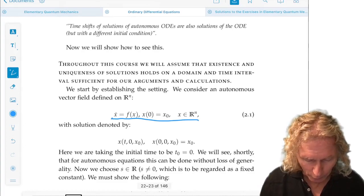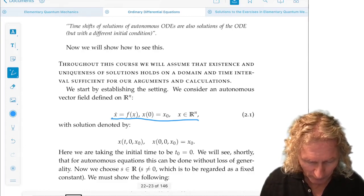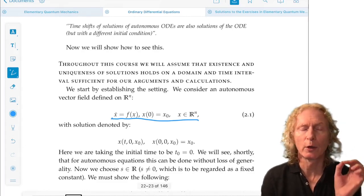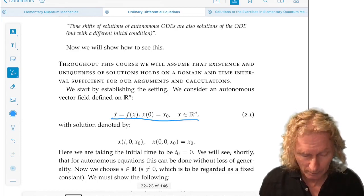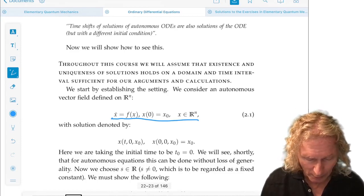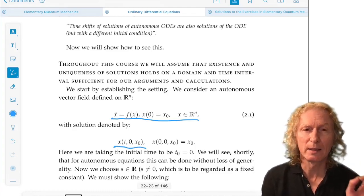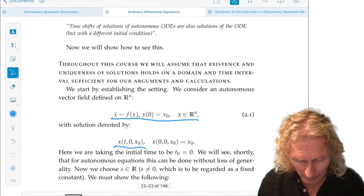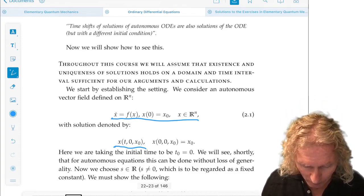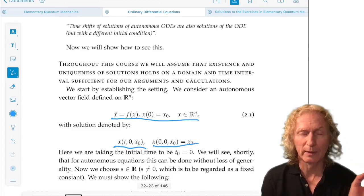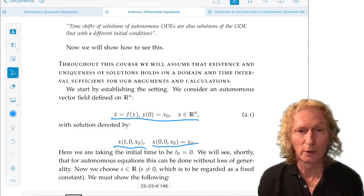So the notation I have for solutions, you want to make sure you understand this. There are usually three arguments: time on the left, the initial position in phase space x_0 on the right, and the initial time in the middle, which we're going to take as 0. And at time 0, evaluating that solution at time 0 gives us the initial condition.